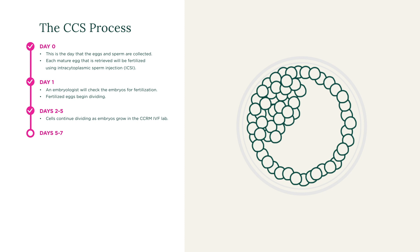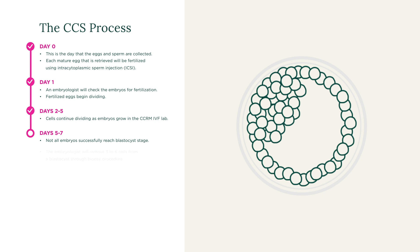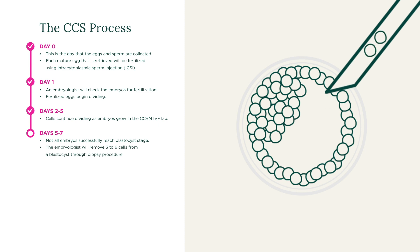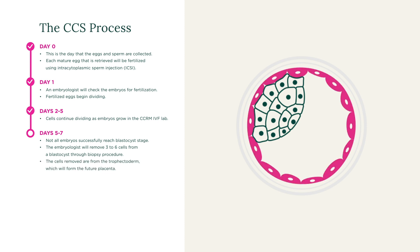It's important to understand that not all of your embryos may grow or reach the blastocyst stage. When an embryo does reach the blastocyst stage, the embryologist will remove three to six cells from the embryo through biopsy. The cells that are removed are from the trophectoderm, which are the cells that will form the future placenta. Cells are not removed from the inner cell mass, which will form the future fetus. The risk of damage to the embryo is very rare, occurring less than one percent of the time.